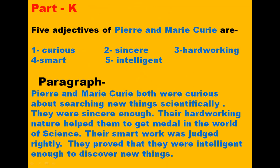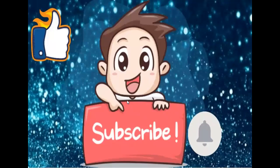Next, the F part: you have to write a paragraph describing five qualities of the Curies. The five qualities are: curious, sincere, hard-working, intelligent, and smart. Find them in sentences from the chapter. I have written a paragraph as the model answer — you can use this solution and write this answer. Thank you so much for watching the video.